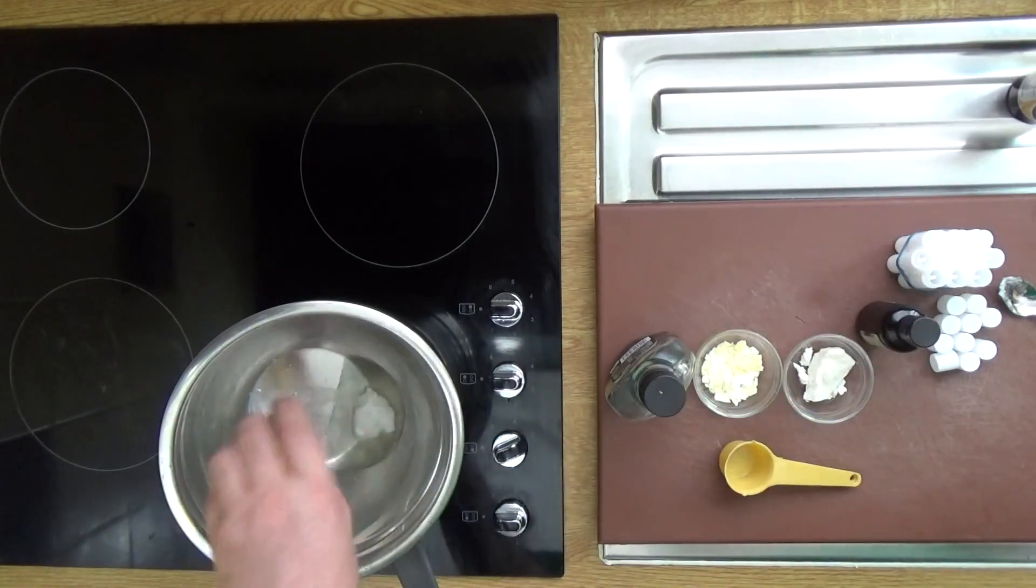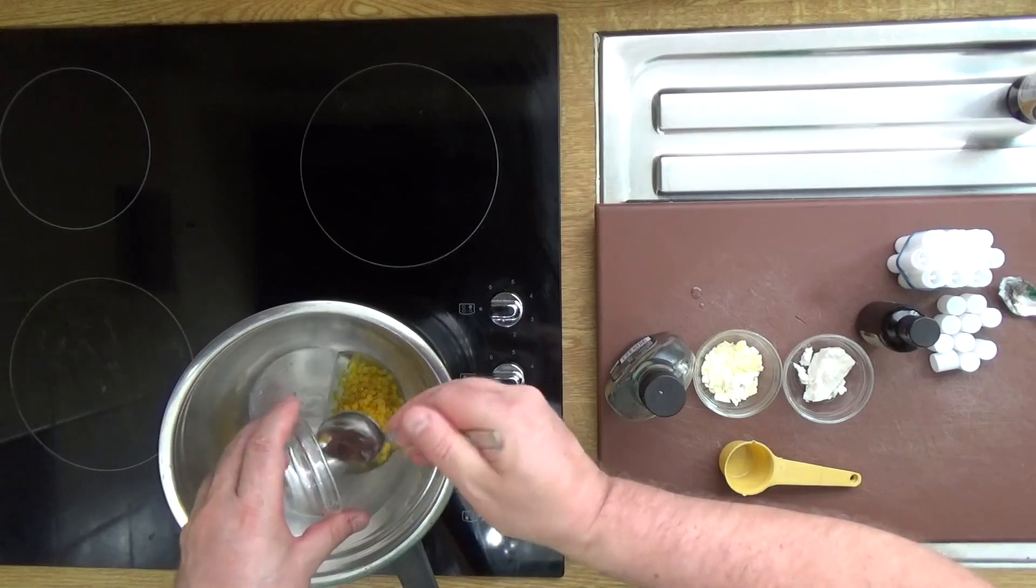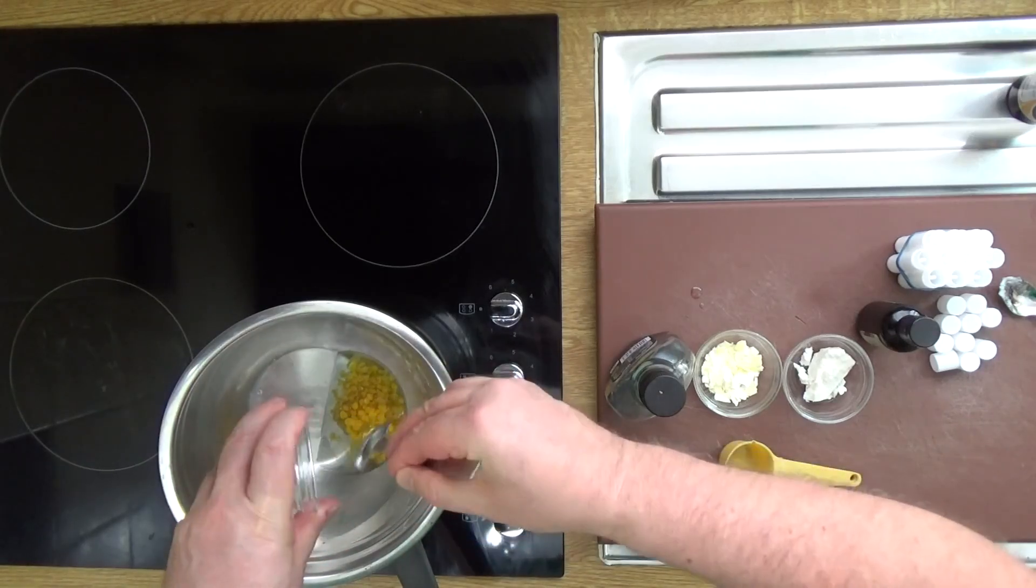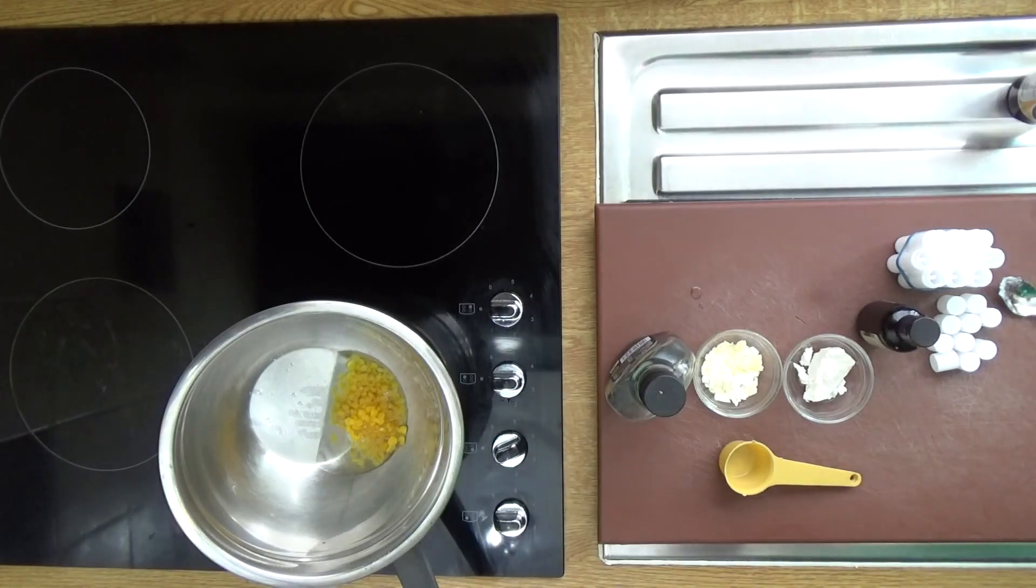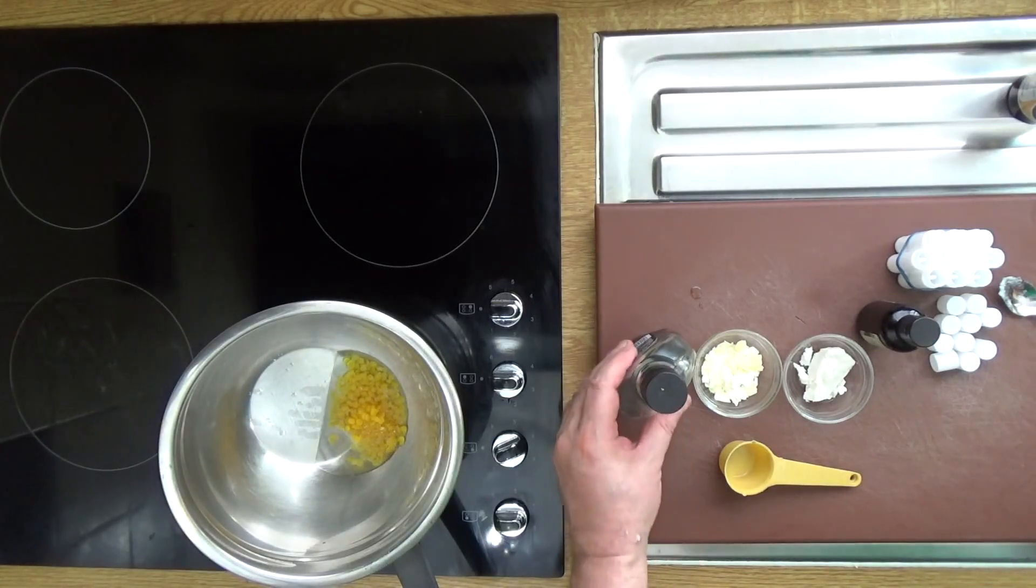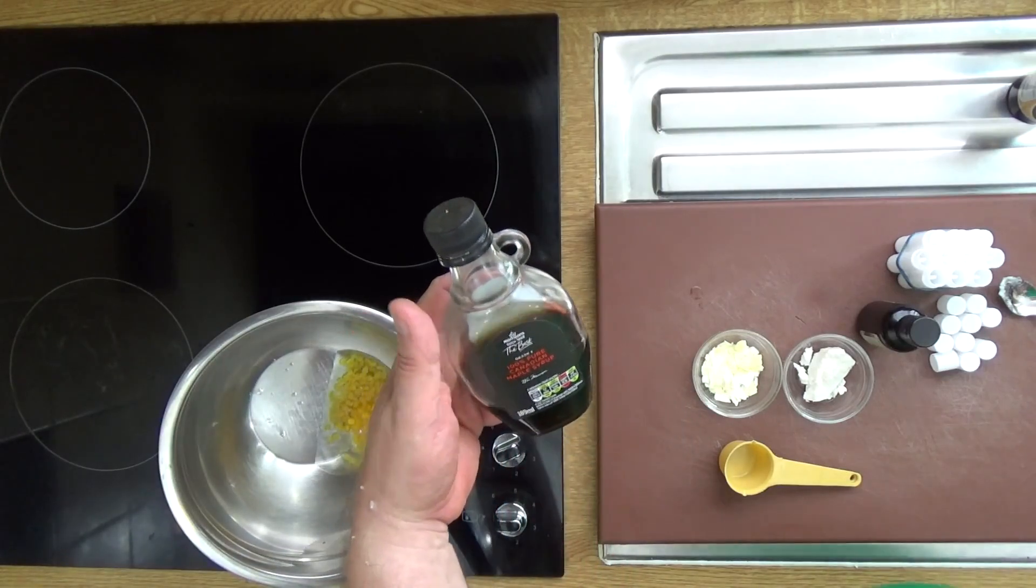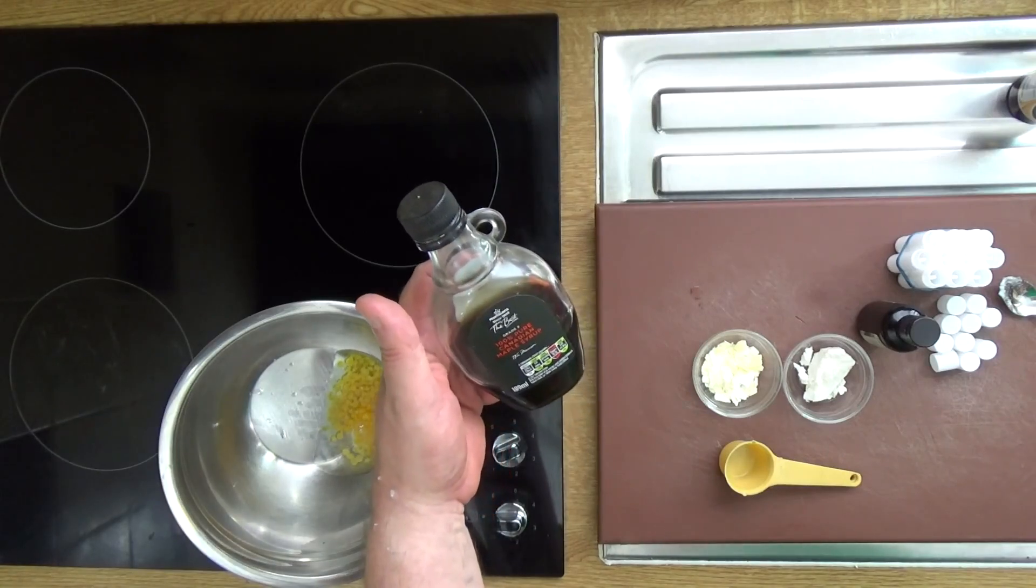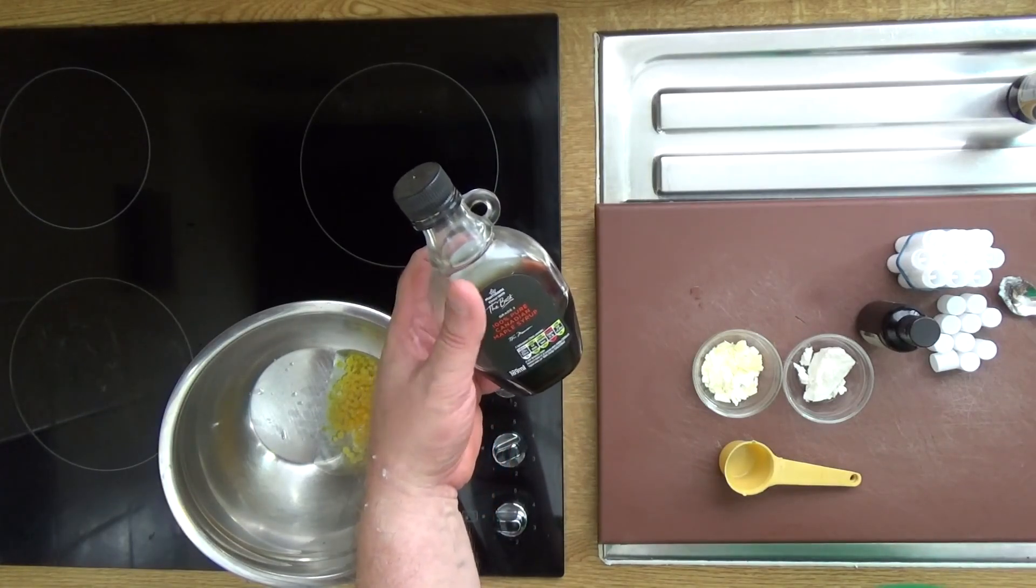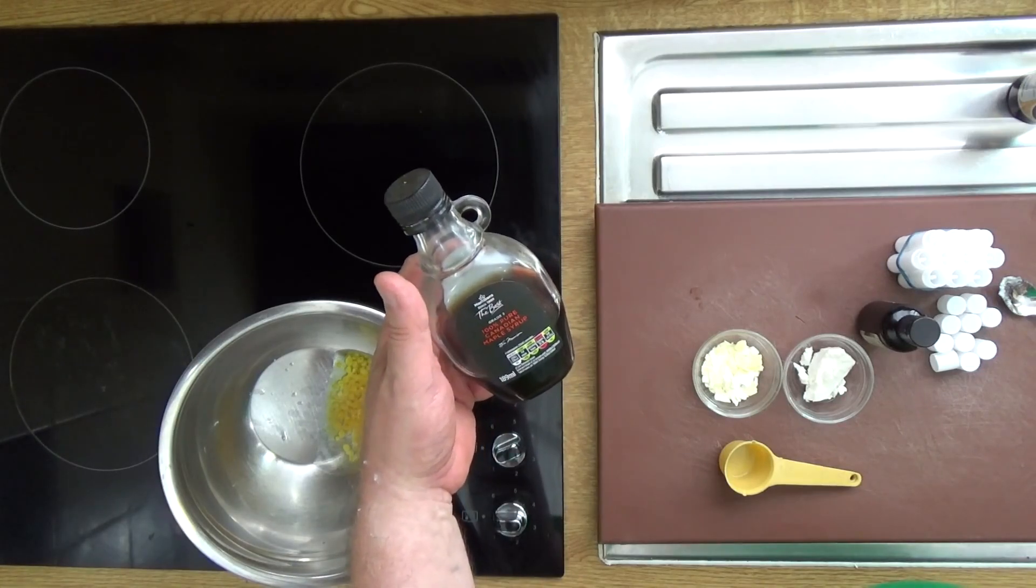And then a tablespoon of beeswax, and I'm using beeswax pellets which are really easy to use and quick to dissolve. The next thing I'm going to put in is maple syrup. This is pure Canadian maple syrup.